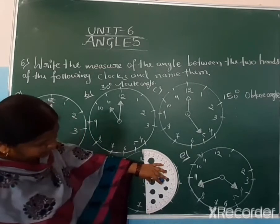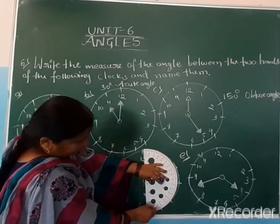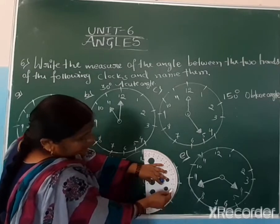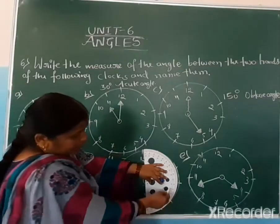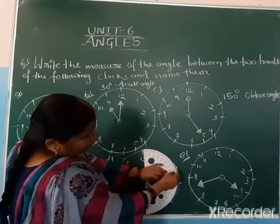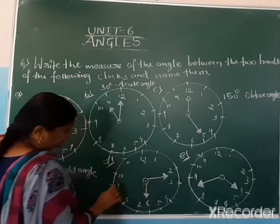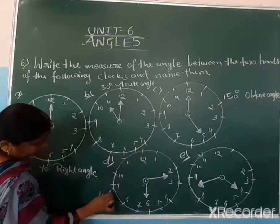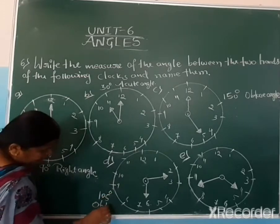Starting from 0: 10, 20, 30, 40, 50, 60, 70, 80, 90, 100, 105. Where does it cross? 105 degrees. What type of angle is this? This is also an obtuse angle.